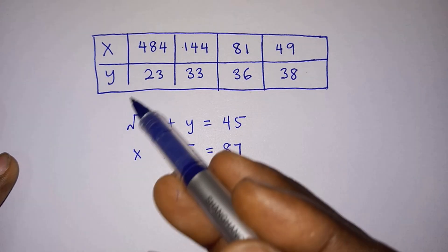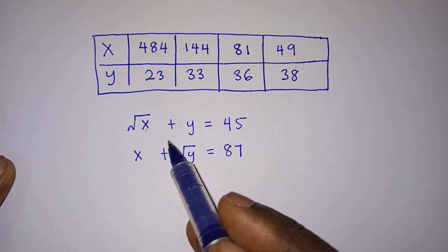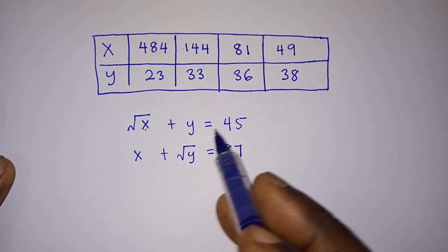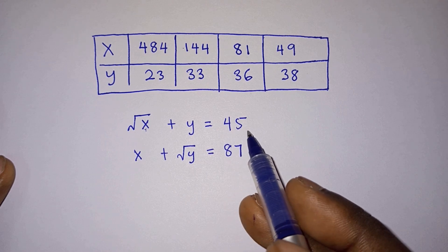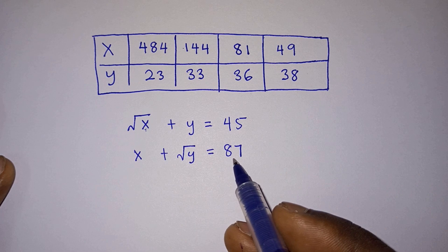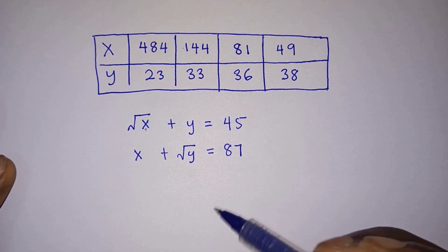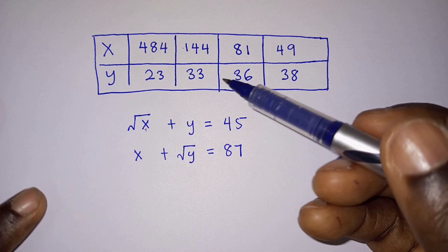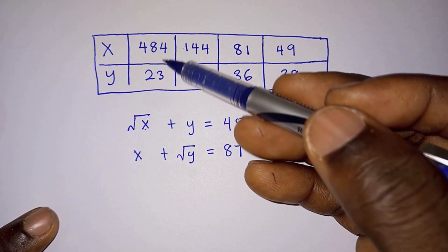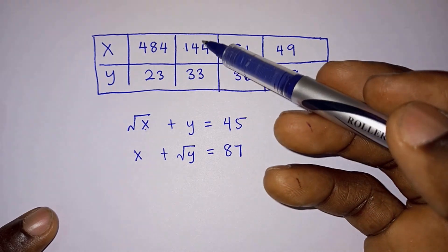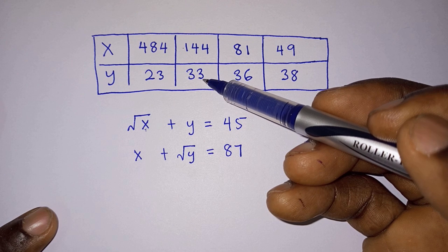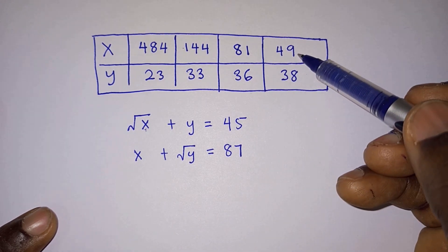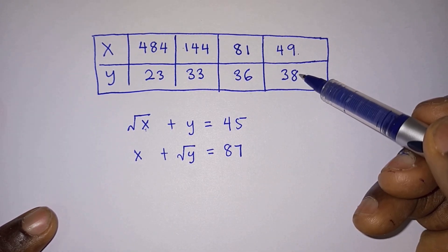Now we test which solutions satisfy the equations. Since our equations contain √x and √y, and the right-hand sides (45 and 87) are whole numbers, both x and its corresponding y must be perfect squares. x = 484 is a perfect square but y = 23 is not. x = 144 is a perfect square but y = 33 is not. x = 81 and y = 36 are both perfect squares. x = 49 is a perfect square but y = 38 is not.